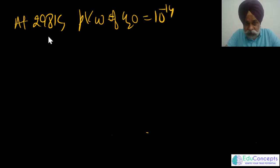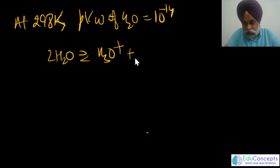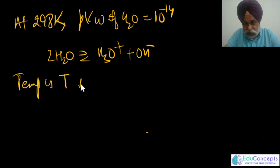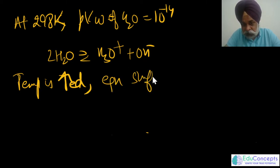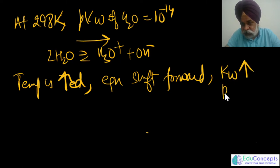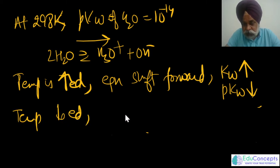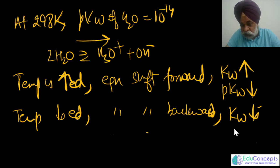If you increase or decrease temperature — because the dissociation of water is endothermic — Kw will change. If temperature is increased, the equilibrium shifts forward; extra heat is consumed, Kw increases, and pKw decreases. If temperature is decreased, the equilibrium shifts backward, Kw decreases, and pKw increases. You always have to remember this.